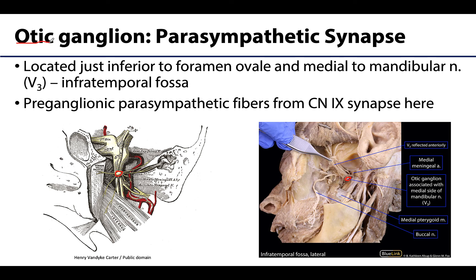The otic ganglion is one of the four peripheral parasympathetic ganglia of the head, very closely associated with V3, and this is where those preganglionic parasympathetic fibers will synapse.